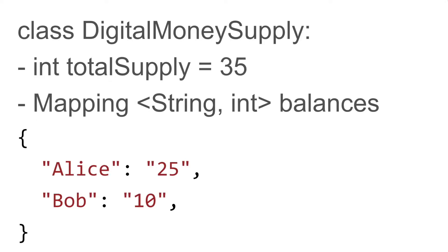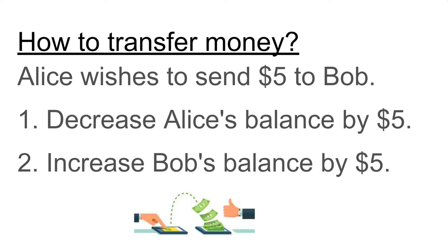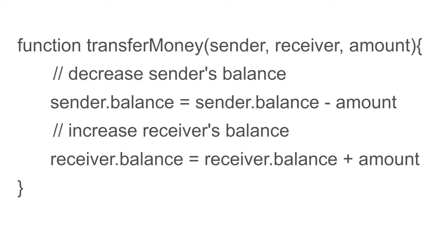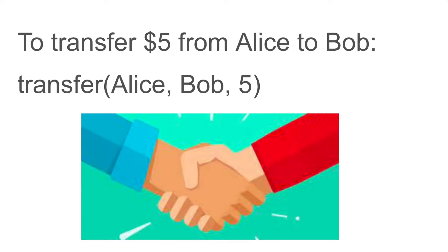Using the earlier system, in this Digital Money Supply, the total supply might be $35, and the balances would have Alice with $25 and Bob with $10. So how are we going to transfer money in the system? If Alice wants to send Bob $5, then we're going to decrease Alice's balance by $5 and increase Bob's balance by $5. To write this in code, we might have a function called transferMoney which takes in the sender, the receiver, and the amount — decrementing the sender's balance and incrementing the receiver's balance by that amount. To transfer money from Alice to Bob, I call transfer passing Alice as the sender, Bob as the receiver, and $5 as the amount.